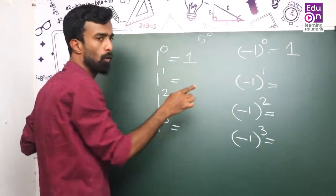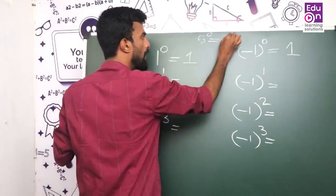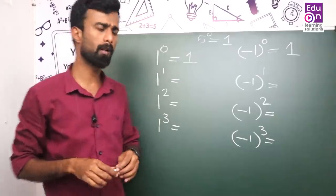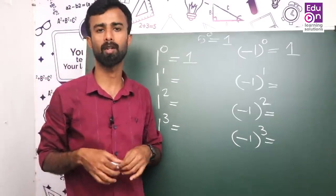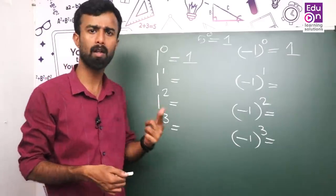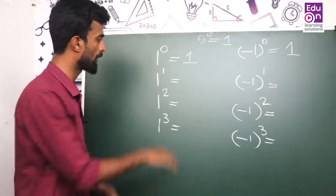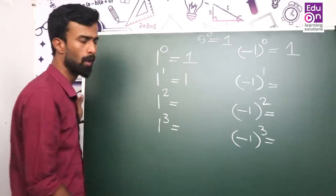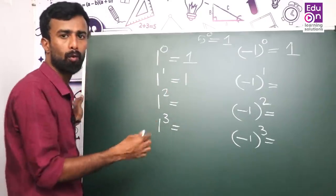5 raised to 0 equals 1. 5 raised to 0 or 10 raised to 0 — any number raised to 0 gives 1. 1 raised to 1: a number raised to 0 always gives the answer 1.